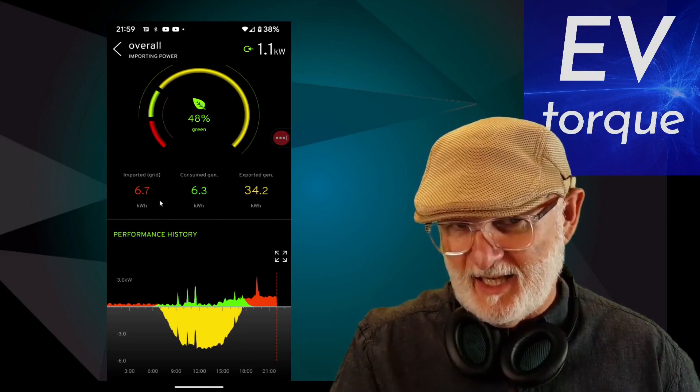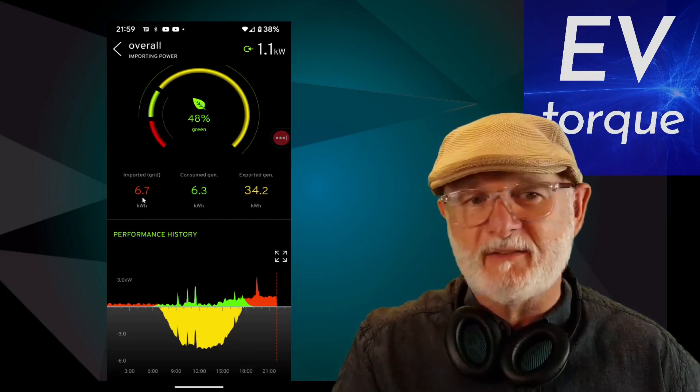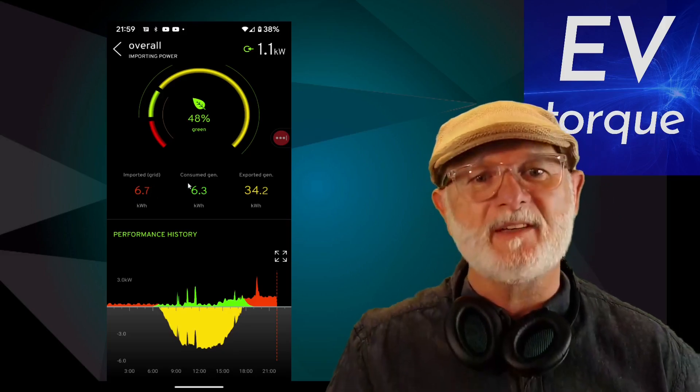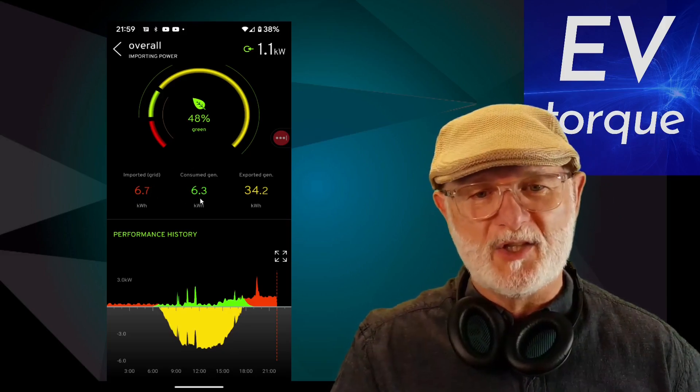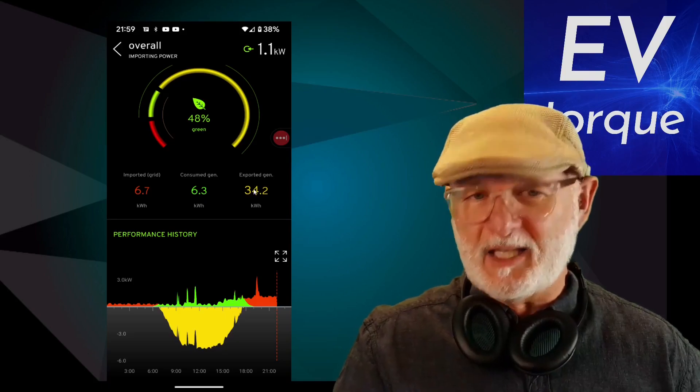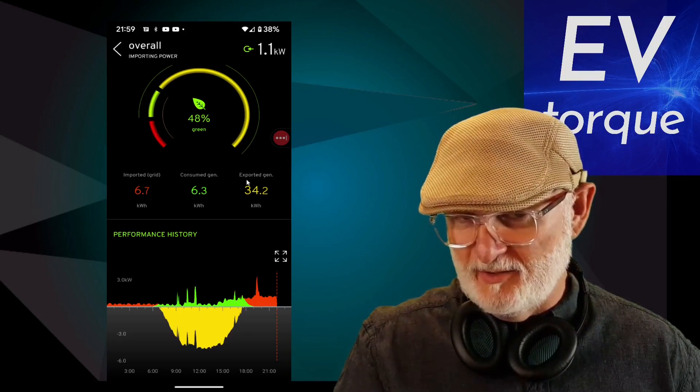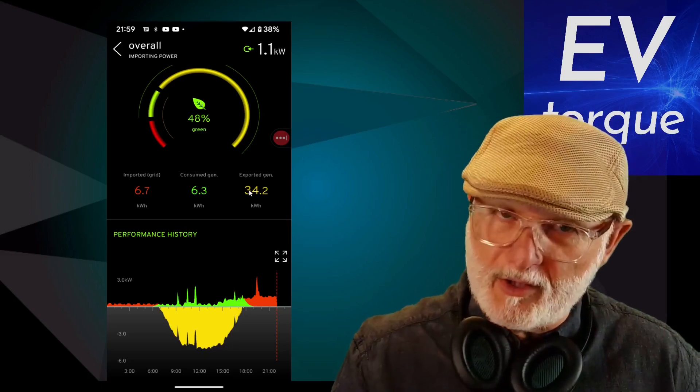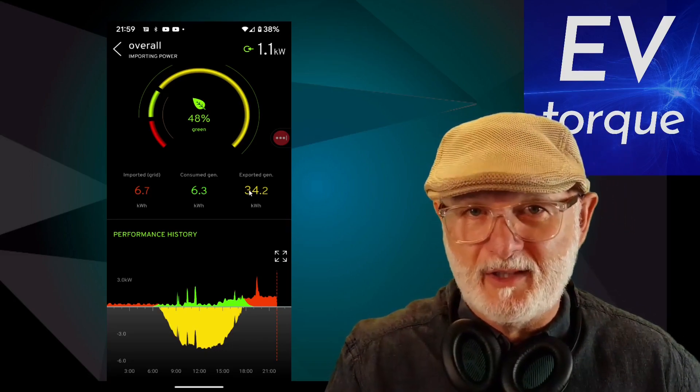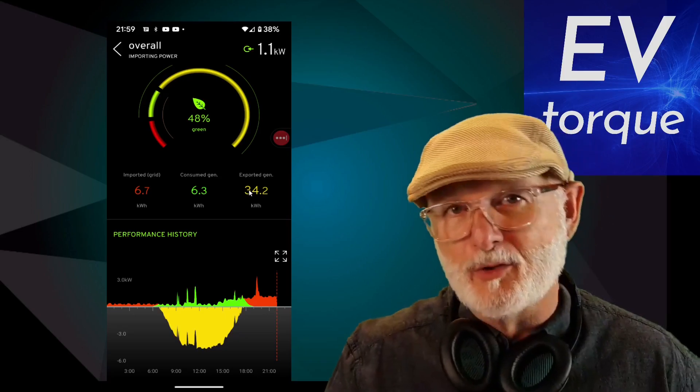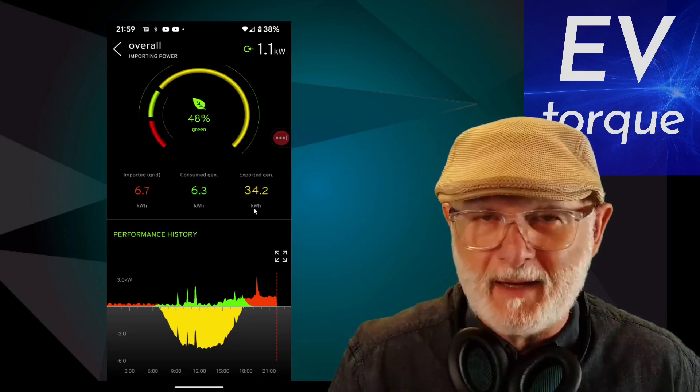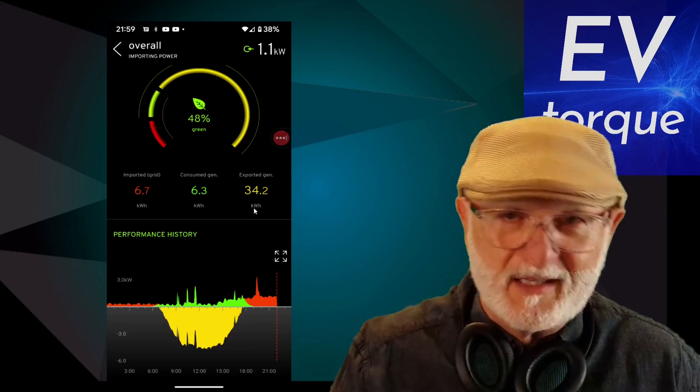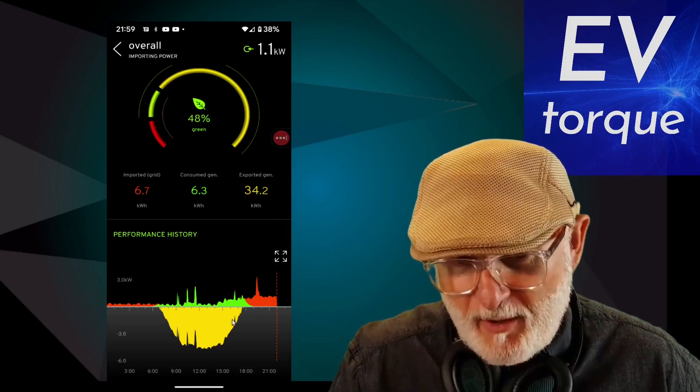And again, this is showing us everything we want to know right now. If we have a look at the colors that are used as a key: import is red at 6.7, our consumed energy is 6.3, and our exported is in yellow. So that's the leftover that we're sending out to the grid. So if you've got a still-healthy feed-in tariff, multiply that by what you're seeing here every day and you'll work out how much money you'll be paid to be providing this out to the grid.